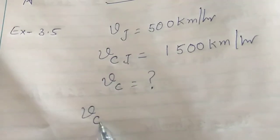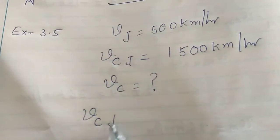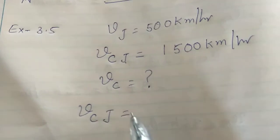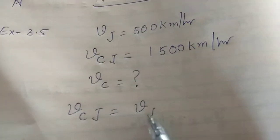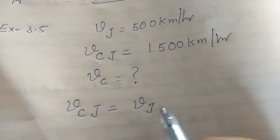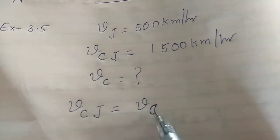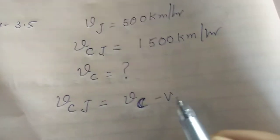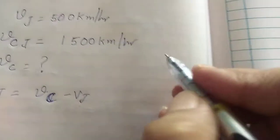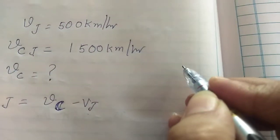What is the formula for velocity of combustion products with respect to the jet plane? It is V_C minus V_J, where V_C is the velocity of combustion products and V_J is the velocity of the jet plane. Directions are very important here.